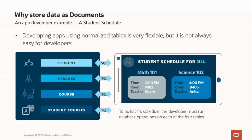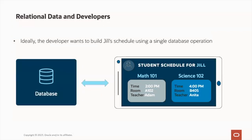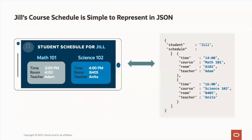But in an application-centric model, developing apps using normalized views and tables is very flexible, but it's not always easy for developers. In this case, we can see there are four individual SQL queries required to access each of the underlying normalized tables from the database. The application developer is responsible for joining, filtering, and aggregating the data to render it in the appropriate format to meet the scheduling application. Ideally, the developer wants to build Jill's schedule using a single database operation.